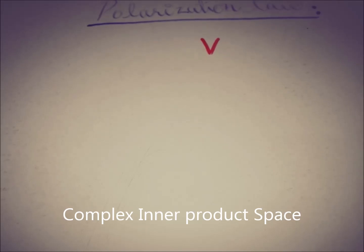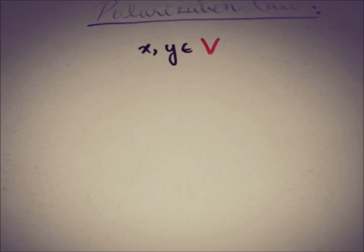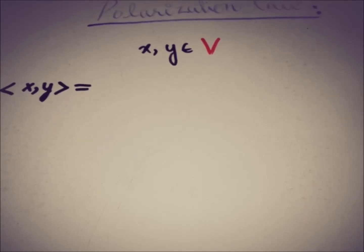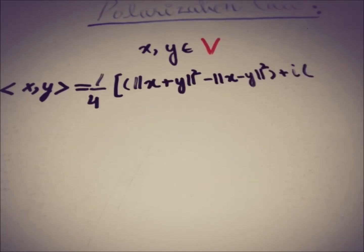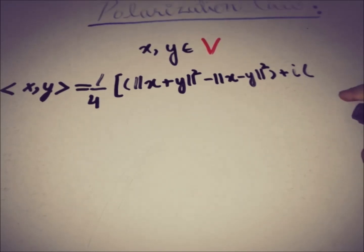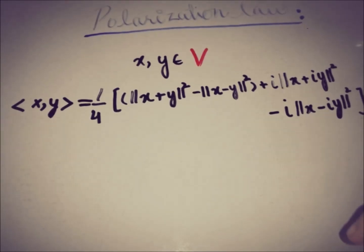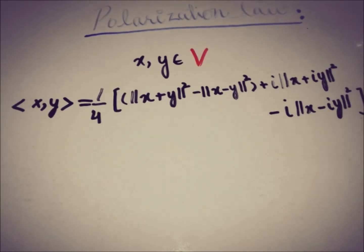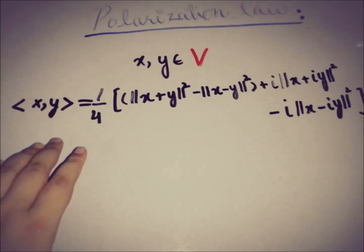The polarization identity states that we can write the inner product of two elements from the inner product space in the form of a real part and an imaginary part. The statement is: one-fourth times the norm squared of x plus y, minus the norm squared of x minus y — this is the real part — plus iota times the norm of x plus iota y squared.